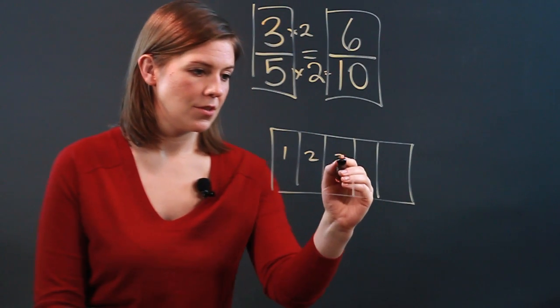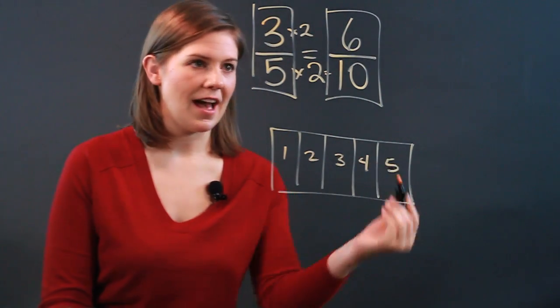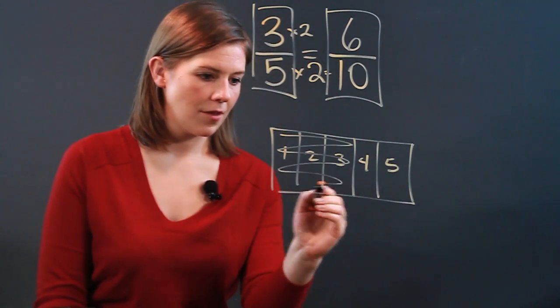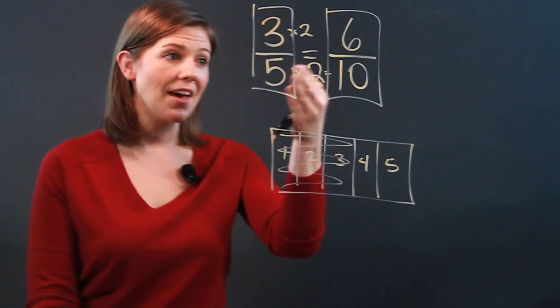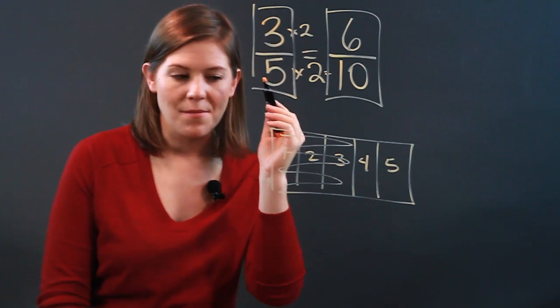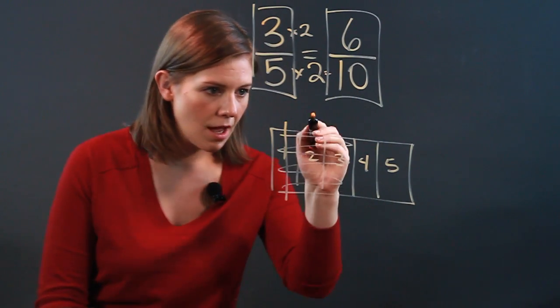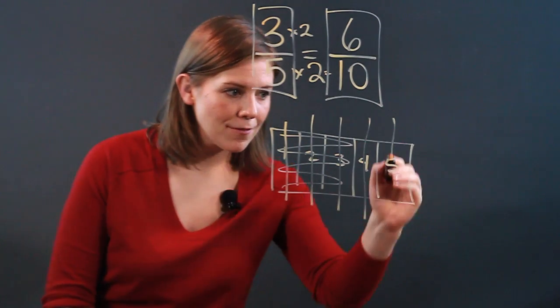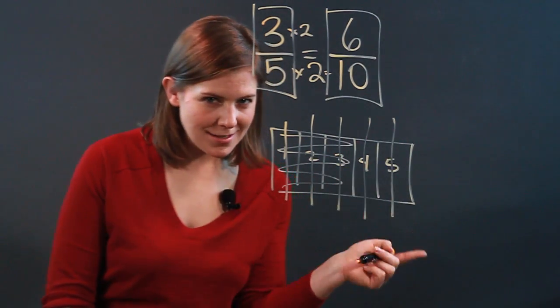And here we have 1, 2, 3, 4, 5 pieces. So the 3 fifths here would be all 3 of those 5. Now that we have 6 tenths, we've doubled our denominator. We've done that by splitting each of those 5 in half in order to make twice as many.